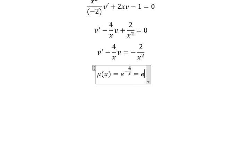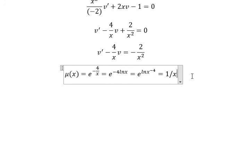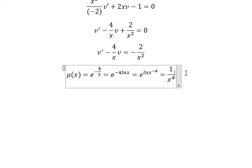We get e to the power of negative 4 L and x equal to e to the power of L and x to the power of negative 4, and we got 1 over x to the power of 4. So we multiply both sides with 1 over x to the power of 4.